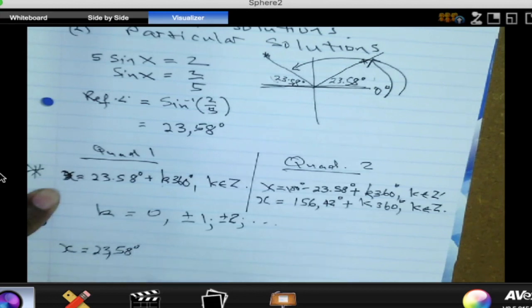Then you check: is 23.58 in your range? Is it in the interval that we want? 23.58 is there between negative 360 degrees and 360 degrees, so we need this one. So that is what we get when K is 0.